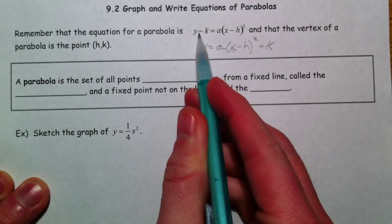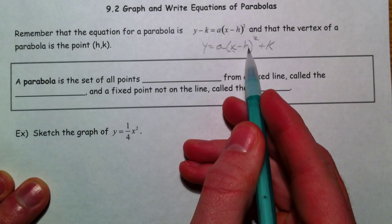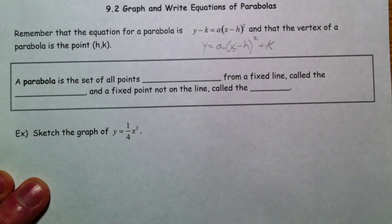And so if the k is with the y, it's opposite for both of them, and so if it's x minus 5, then 5 would be the x coordinate for the vertex, so on and so forth.